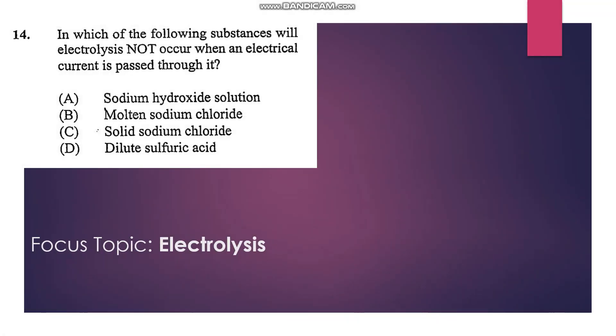Number 14: in which of the following substances will electrolysis not occur when an electrical current is passed through it? An electrical current will not flow through solid sodium chloride, therefore the answer is C.